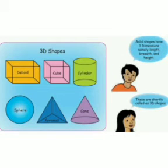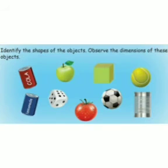Dear students, next move on to see the 3D shapes. Look at the shapes: 3D shapes are cuboid, cube, cylinder, sphere, cone. Solid shapes have three dimensions, namely length, breadth, and height. These are shortly called as 3D shapes. Okay, so three dimensions are 3D shapes.